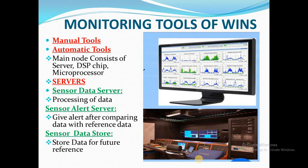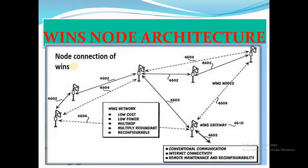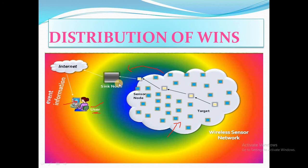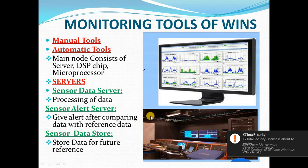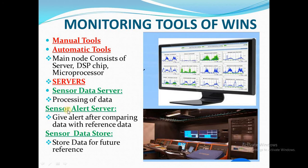Monitoring tools for WINS include both manual and automatic tools. The main node consists of a server, digital signal processor (DSP), and microprocessor. The servers employed are: Sensor Data Server — for processing data; Sensor Alert Server — gives alerts after comparing data with reference data when sensitive value does not match reference value; and Sensor Data Storage — stores data for future reference.